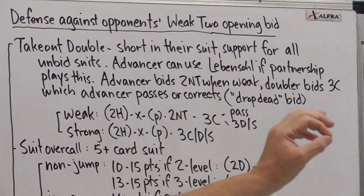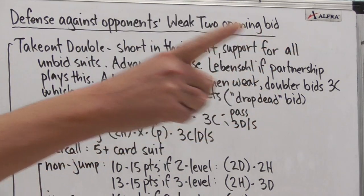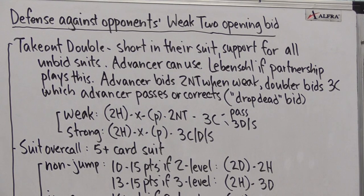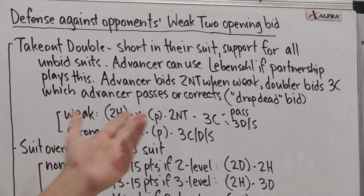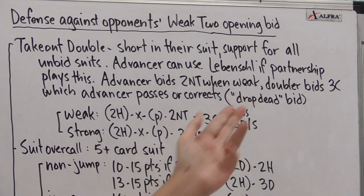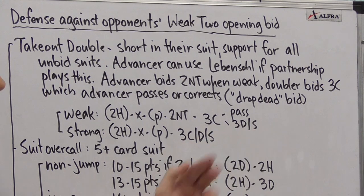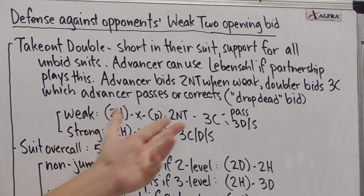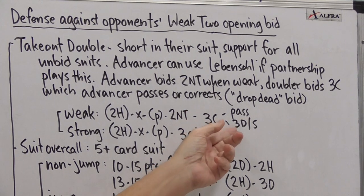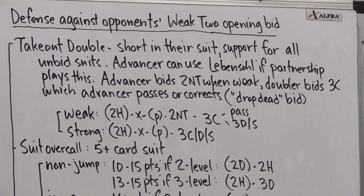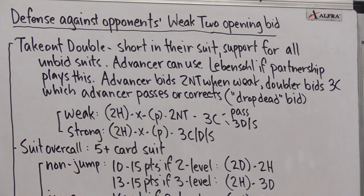When advancer bids two no trump when weak, so the bidding might go two hearts to my left, takeout double over here, pass. When I have a weak hand, I'm going to bid two no trump and I'm expecting the takeout doubler to bid three clubs. Two no trump is a relay to three clubs. And then I either pass that if that's my suit. Or I correct to diamonds or spades if that's my suit. When the opponents are bidding hearts, I would not be bidding hearts, it would either be diamonds or spades. And you have been alerted to the fact that I'm weak and you should pass because I made the Lebensohl two no trump call.